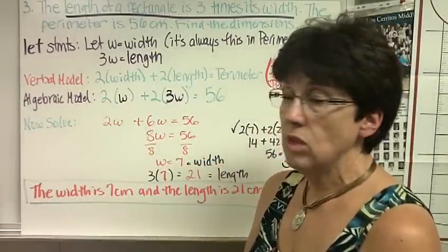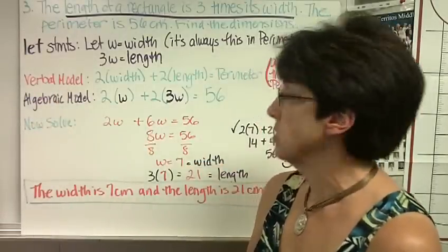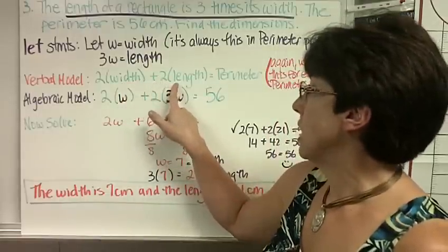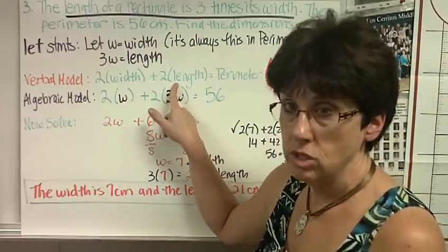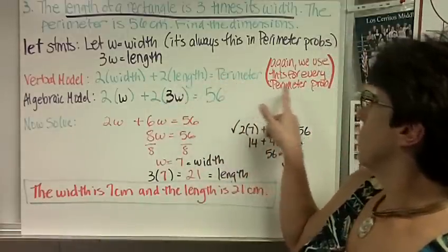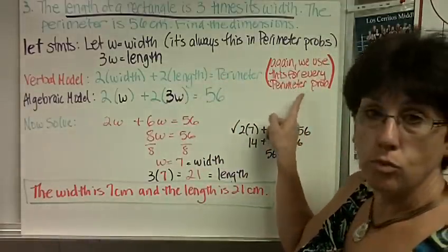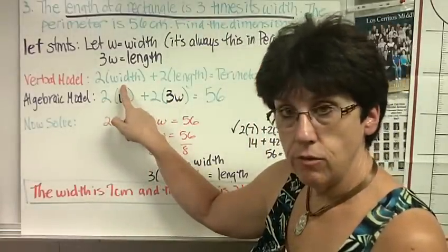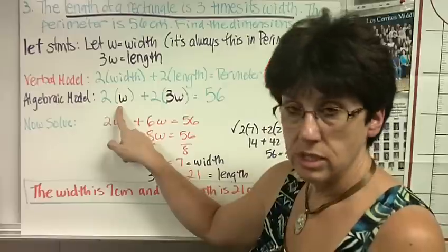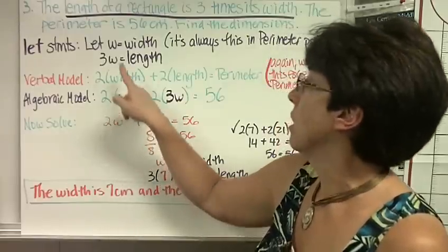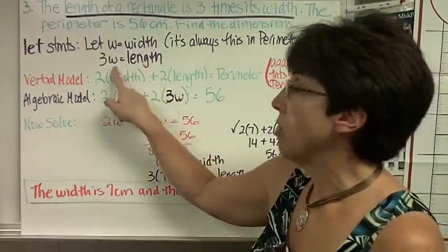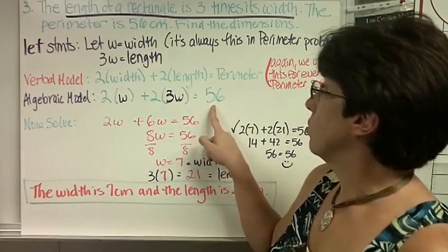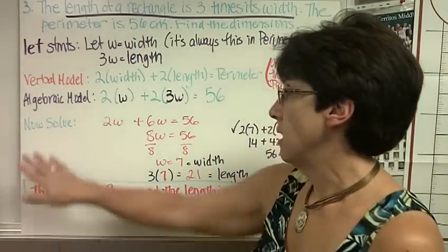Verbal model. Once again, we always write these for perimeter problems. 2 times the width. Remember, parentheses means multiply. Plus 2 times the length. No, you may not just write the letters. You need to write the words out. Equals the perimeter. I wrote, again, we use this for every perimeter problem. Now we substitute. 2 times. What are we saying for width? W. When we substitute, we do it in parentheses with multiplying, remember. Plus 2 times what's length? 3 times W. So 2 times 3W equals the perimeter, which is 56 from our problem. Now we're ready to solve.